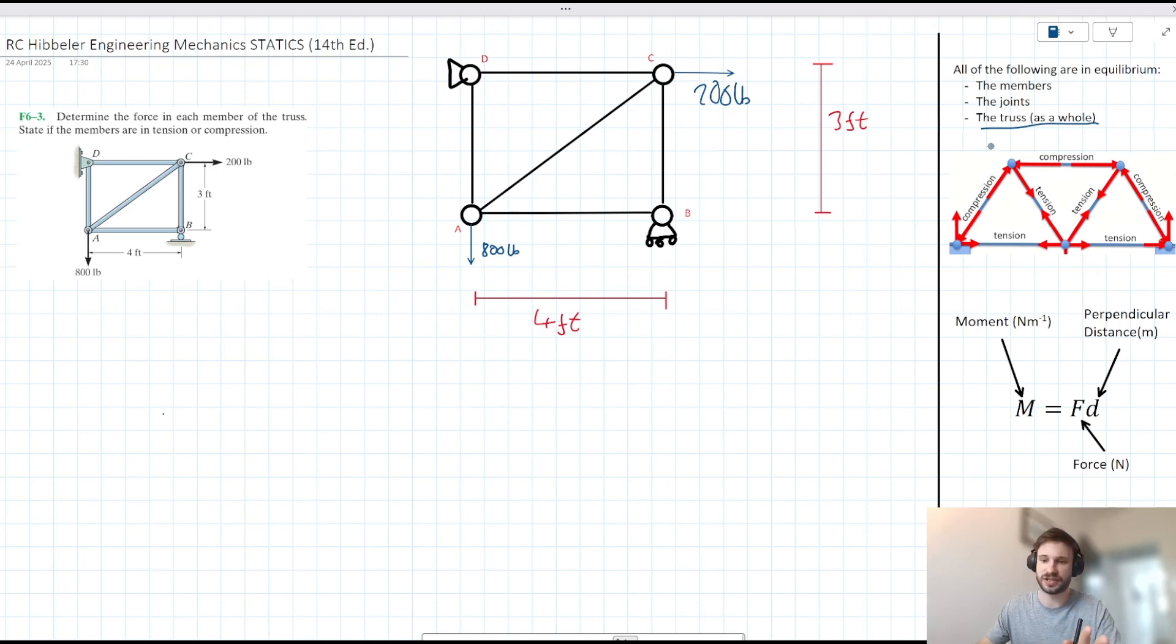Let's first consider the truss as a whole. Naturally we have two supports. We have this fixed support at joint D and we have a roller at joint B. Maybe this is the first time some of you will have seen this little shape here. That's just a roller support, that's all that is. So that just means we can add some resistive forces here. We've got this FB-Y from our roller support.